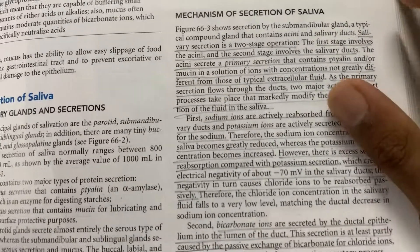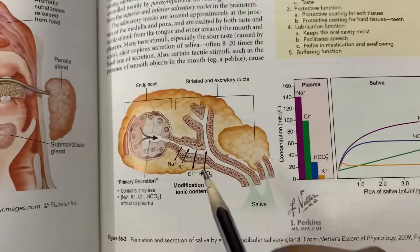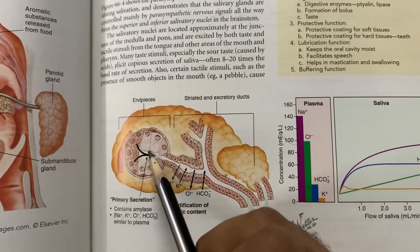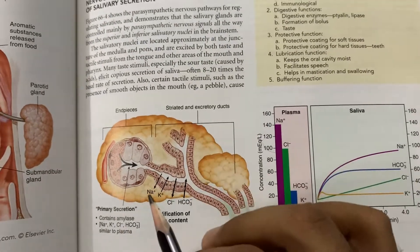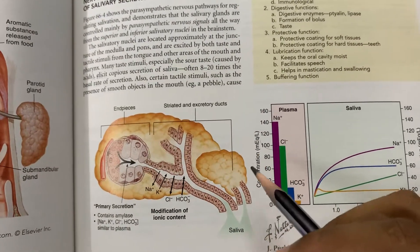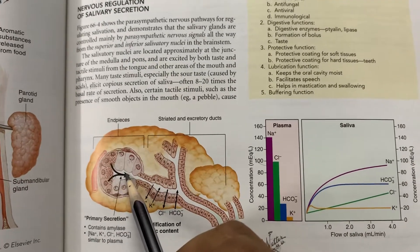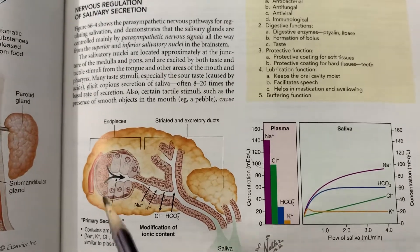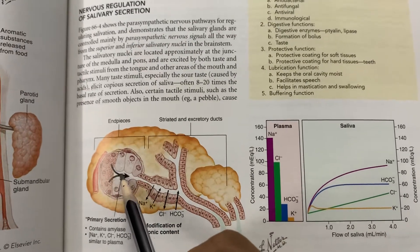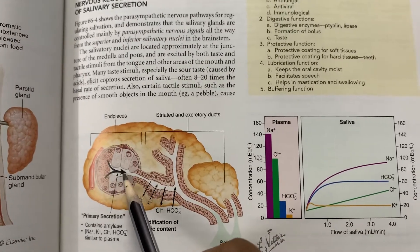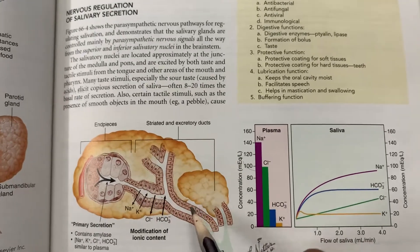Salivary secretion occurs in two stages. First, the acinar secretion is actually isotonic — isotonic to the extracellular fluid composition. The composition of ECF and the initial primary acinar secretion is almost the same. Then, as it passes through the duct, the duct makes it hypotonic. It actively reabsorbs sodium ions and actively secretes H⁺ ions into the duct.